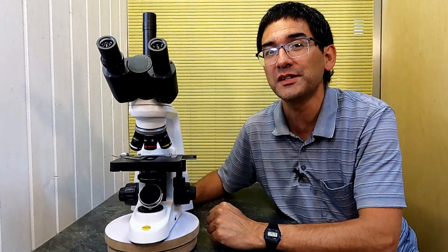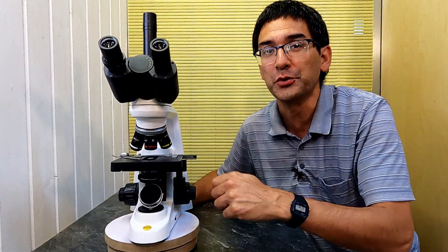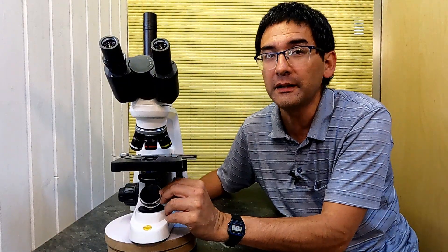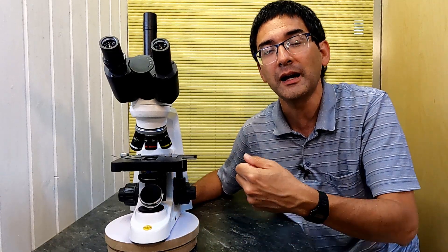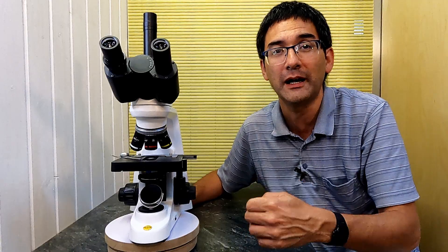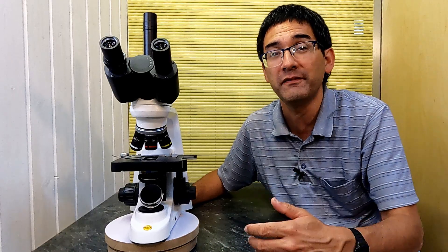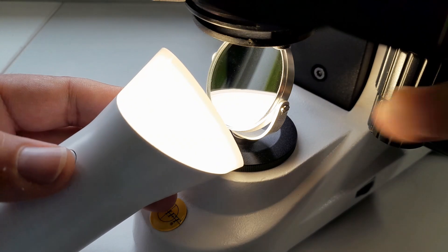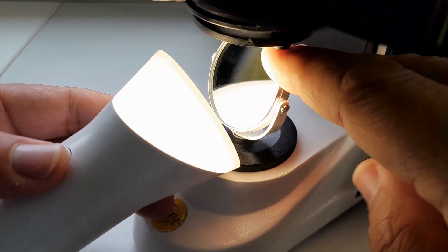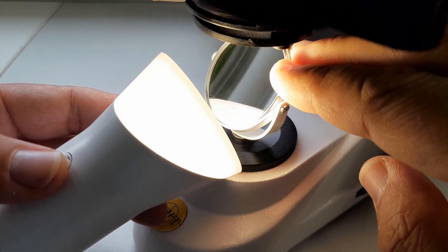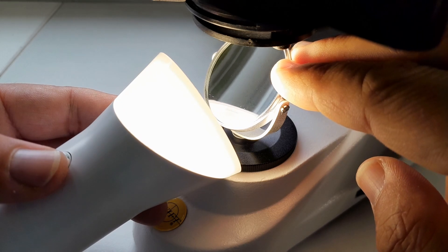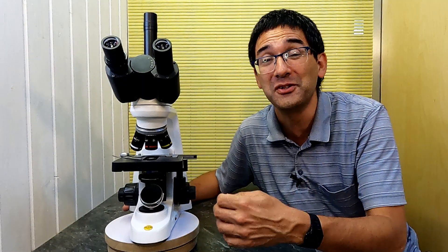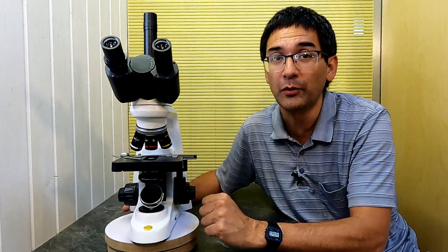But besides that, what are some other possibilities or options? Well, first of all, a mirror does allow you to use a more highly intense light. So if you have an external light source, or maybe a very strong flashlight, then of course this means that you have much more light available. For example, for photography work or for video where you can always use more light. So this is one advantage.